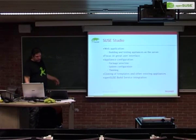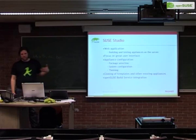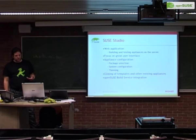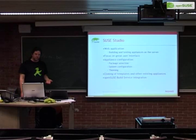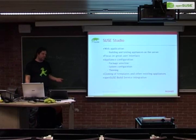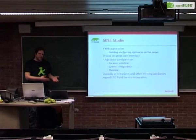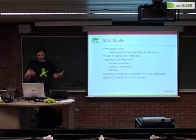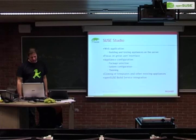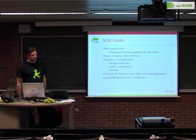The way you create an appliance in Studio is you clone something that already exists. You can use ready-made templates — a text-only appliance or a basic desktop appliance — or you can clone existing appliances, make variants of existing stuff, and share them again. People can then work together on making better distributions and better appliances.